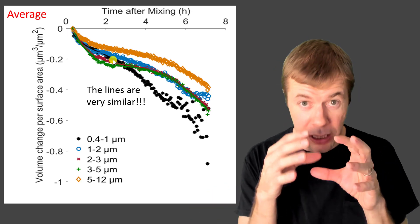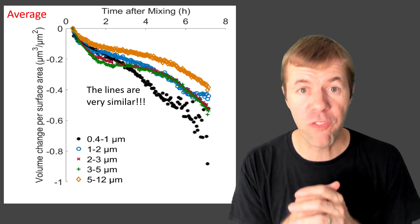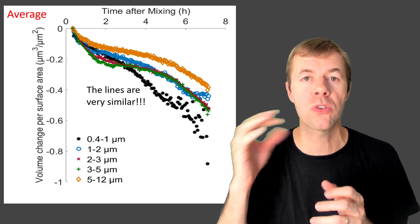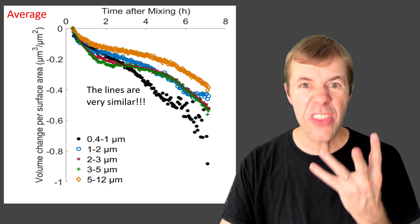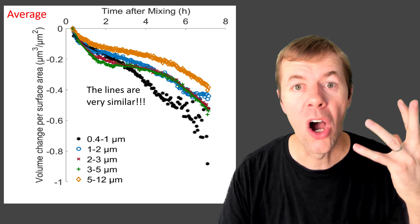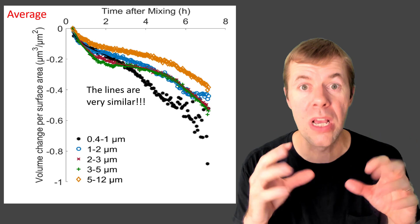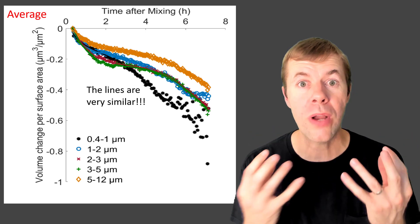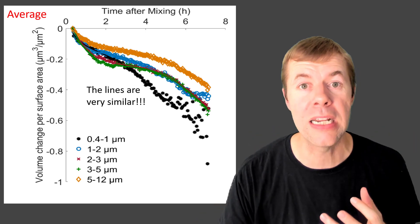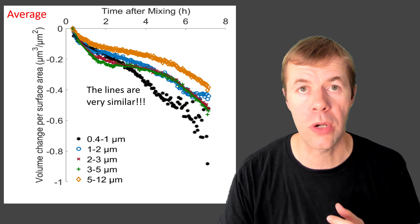They're overlapping for at least the first about four hours or so. And then the small particles react a little bit differently. This is totally awesome. This means that we can normalize these particles by their surface area and get some great insight to how they're performing inside concrete.